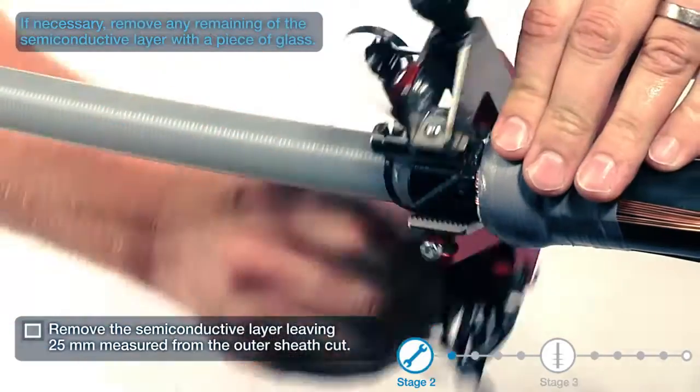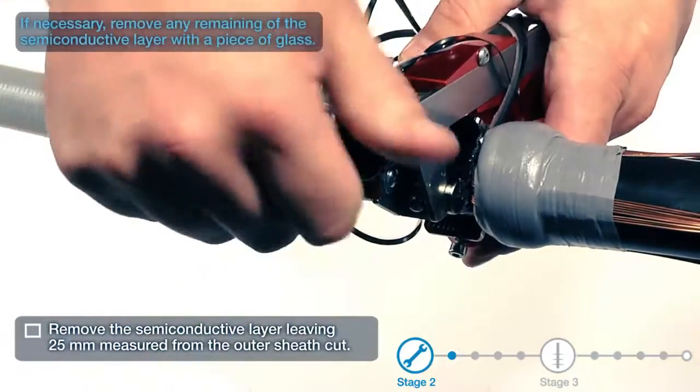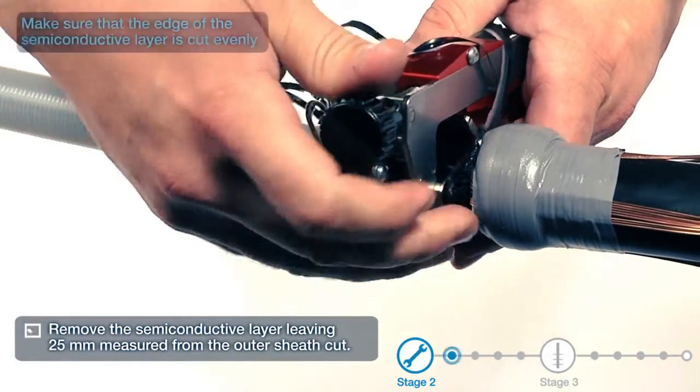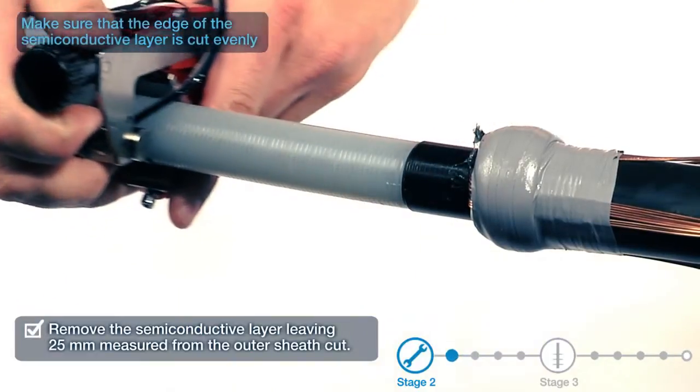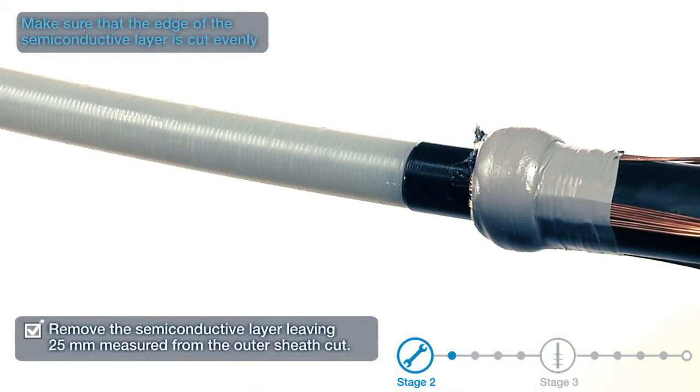If necessary, remove any of the remaining semi-conductive layer with a piece of glass. Make sure that the edge of the semi-conductive layer is cut evenly.